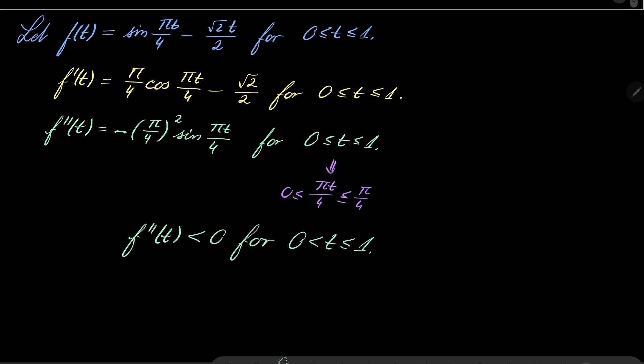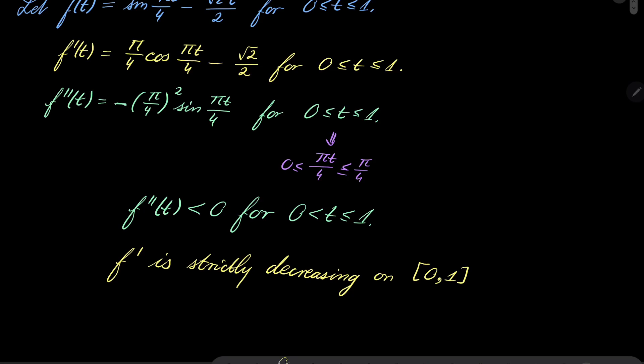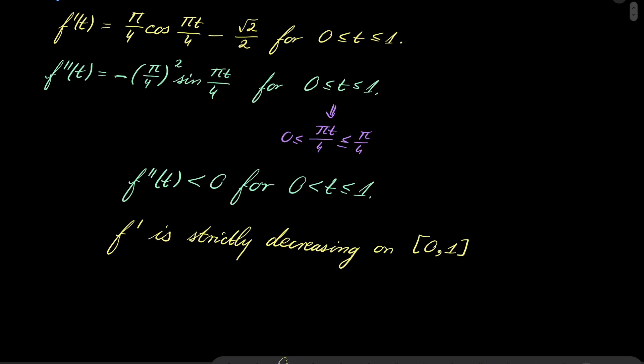In other words, this means that f' is strictly decreasing on the interval [0, 1]. Of course, we can close at 0 because our function is continuous. So f' is strictly decreasing and let's investigate the values at the endpoints: f'(0) and f'(1).